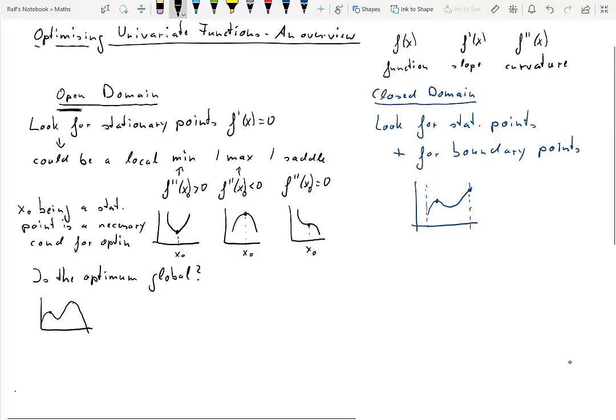Here we have a function, could be a fourth-order polynomial. There are two local maxima, little green dots here, but clearly only one of them is a global maximum.